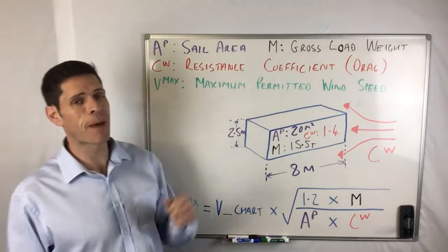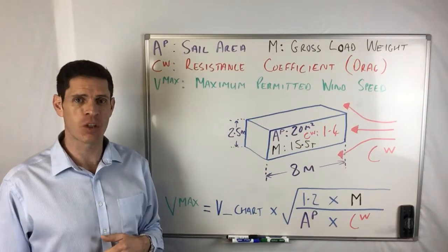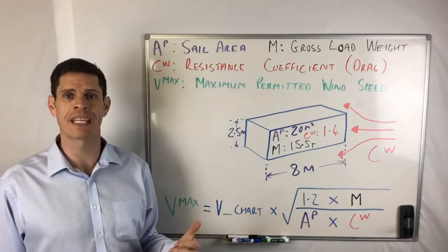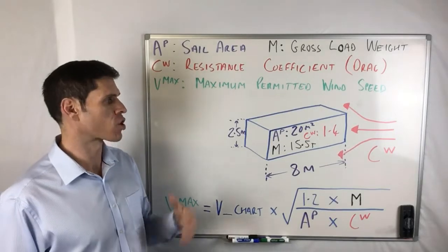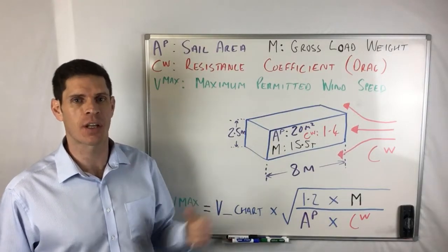The other element, V max, is the maximum permitted wind speed. That's what we're going to be calculating. That's the maximum wind speed you can lift in based on the load you're lifting and the crane you're using.